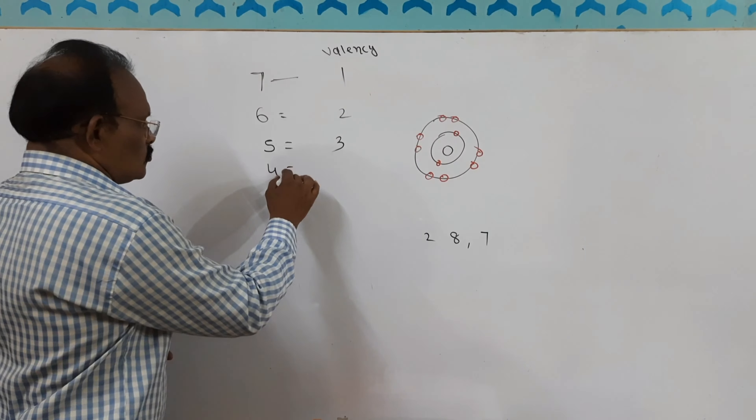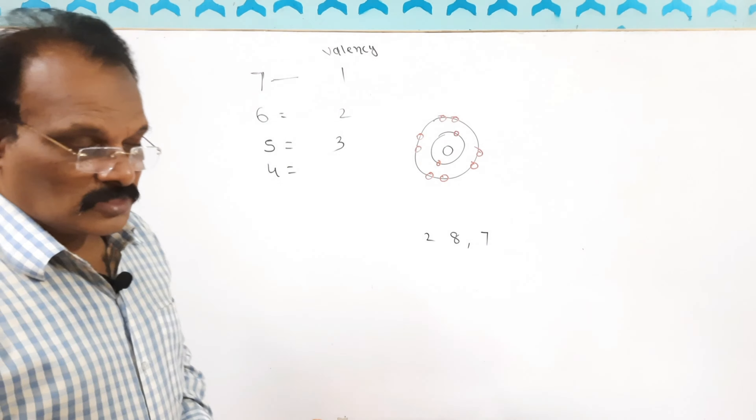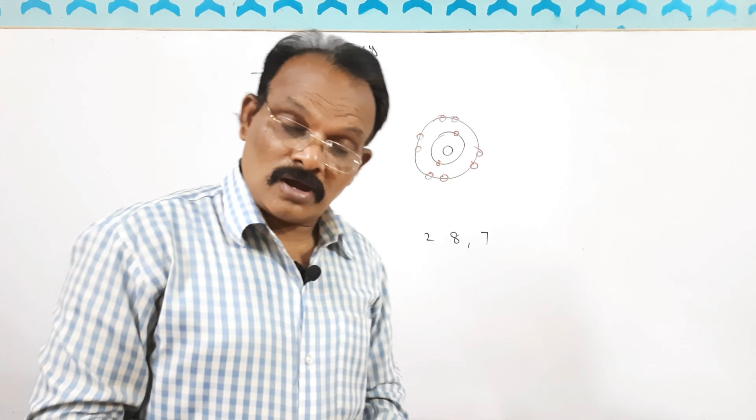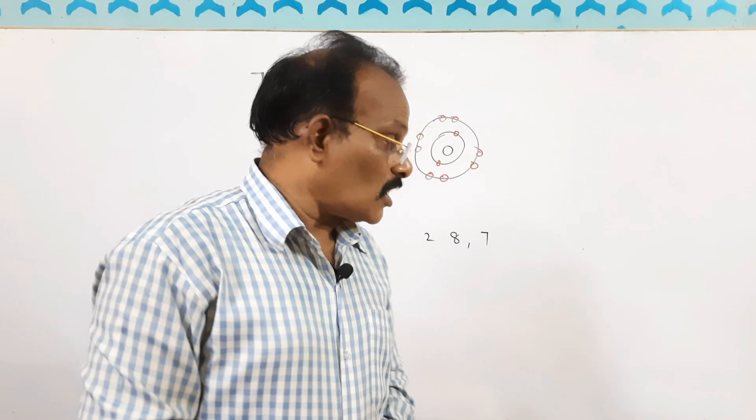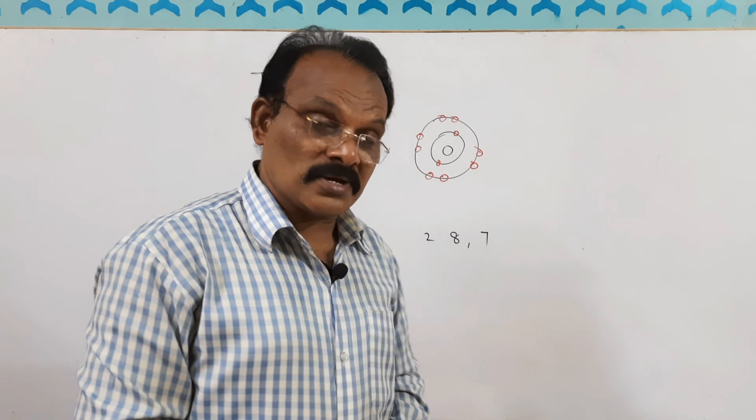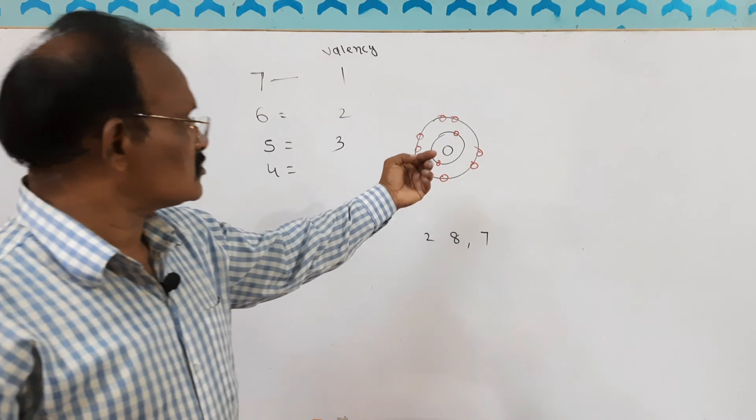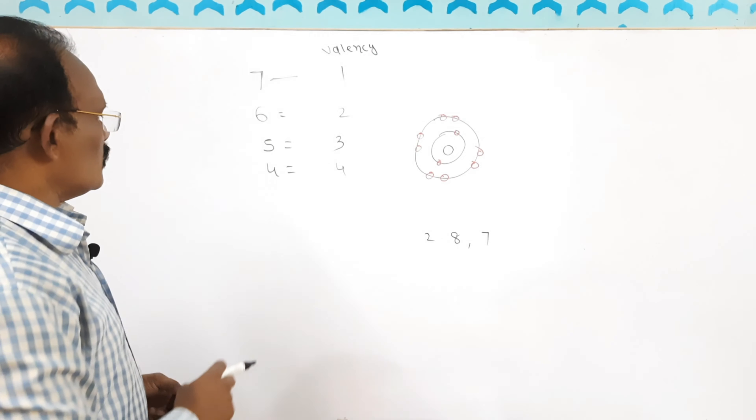For carbon, the atomic number is 6. First shell has 2 electrons, second shell has 4 electrons. It does not complete the octet, so it requires 4 more electrons. Therefore, the valency of carbon is 4.